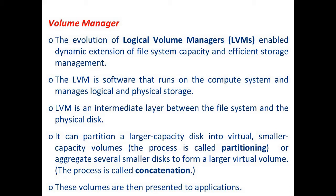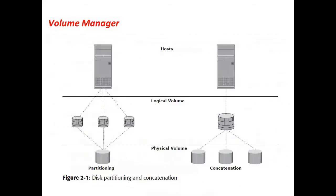The LVM can perform either partitioning or concatenation based on business needs, and the resulting virtual volumes are presented to applications. On the left side of the diagram, one large physical disk is split into multiple smaller logical volumes (partitioning). For concatenation, multiple physical disks are aggregated to form one large logical volume. In both cases, logical volumes are made available to applications running on the host.